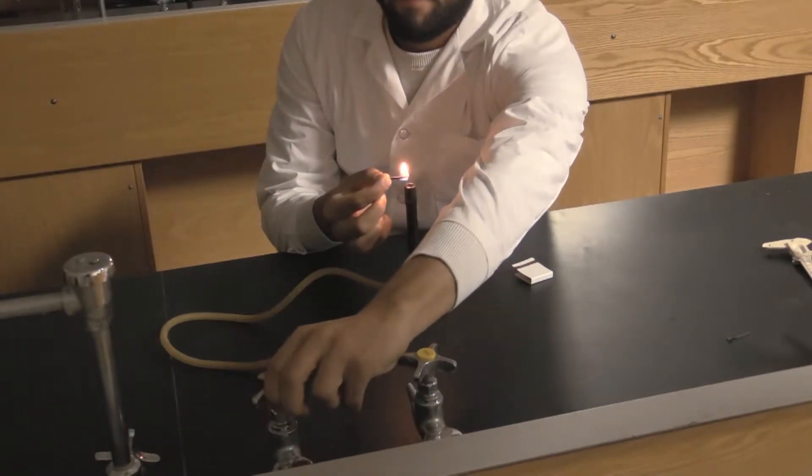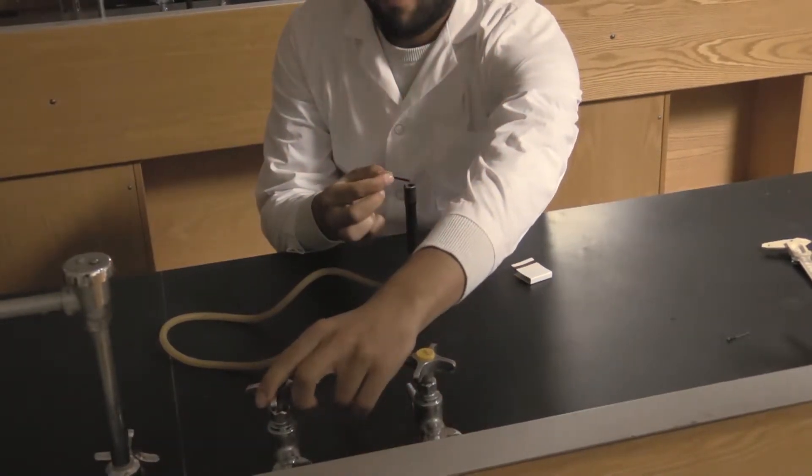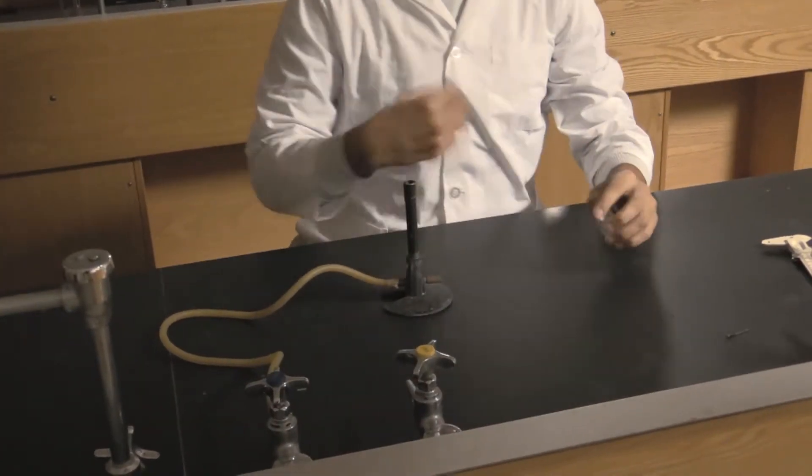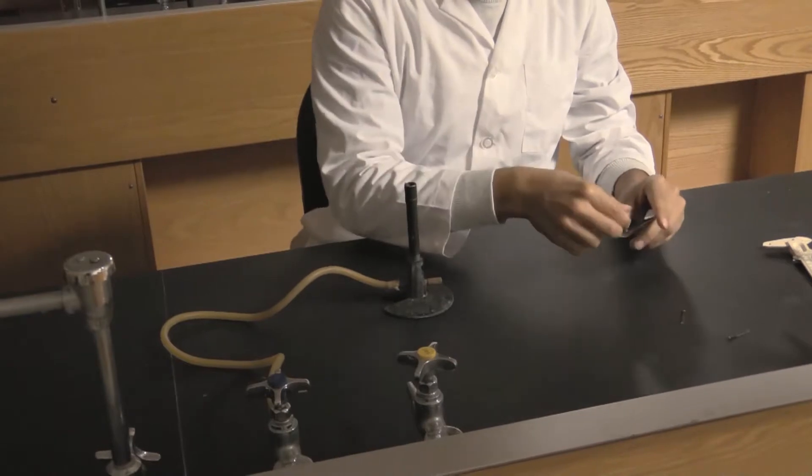Bunsen's improvement on the traditional gas burner was to allow air intake from the bottom of the barrel, near the location of the gas injection. This makes for better combustion and happier students.